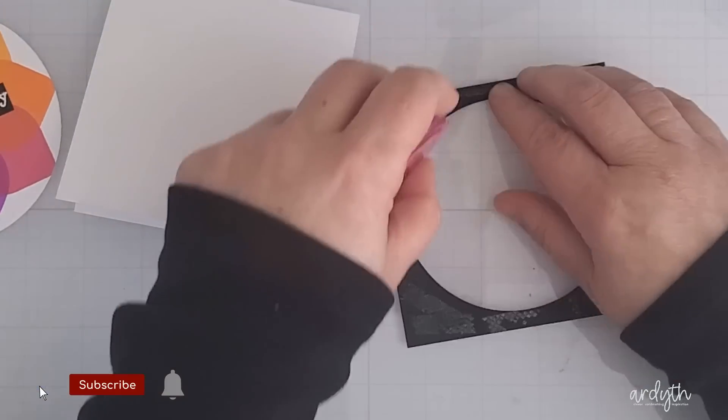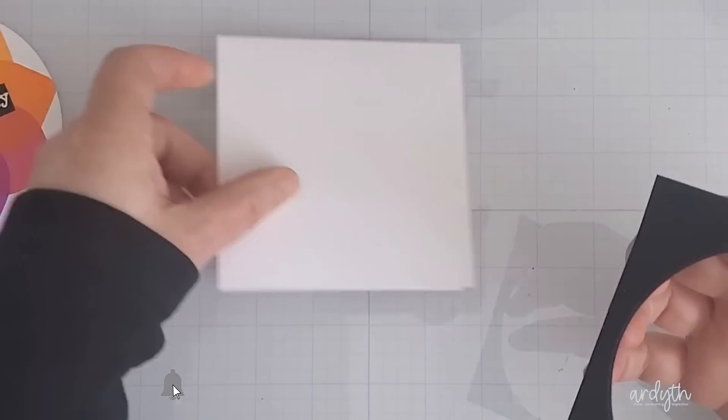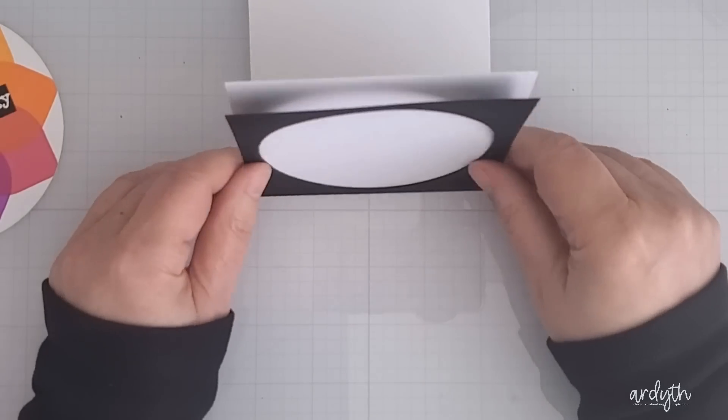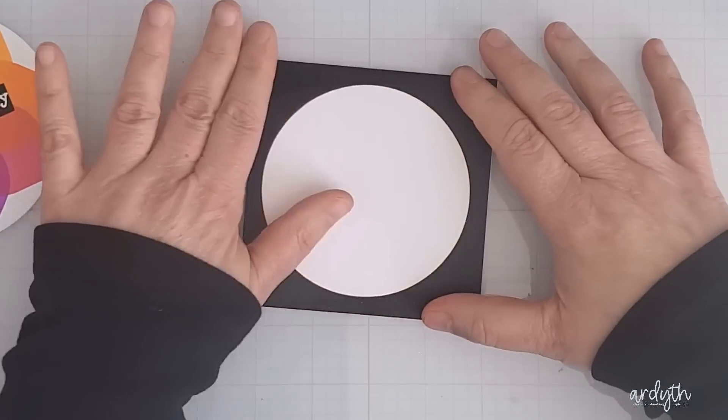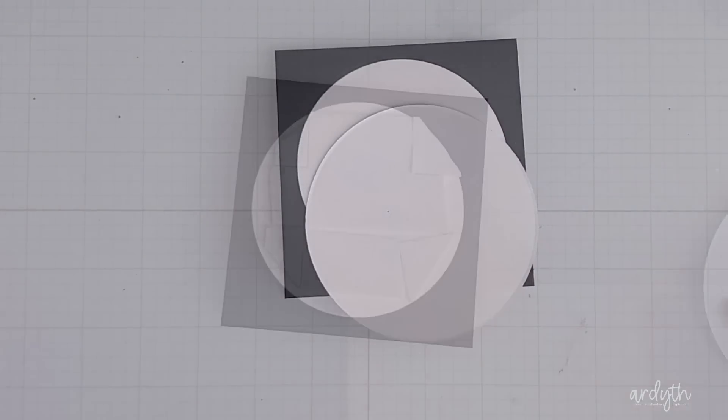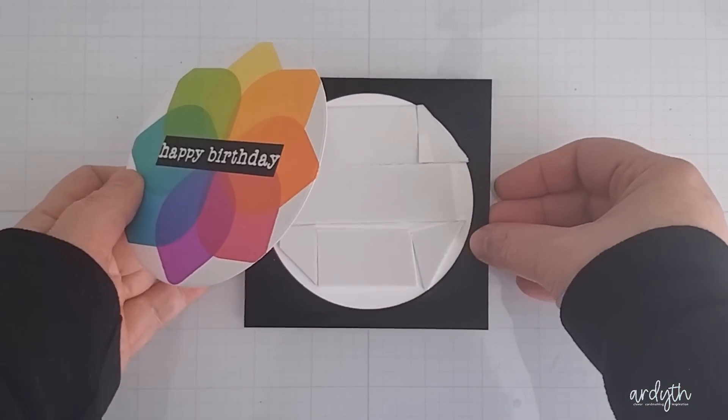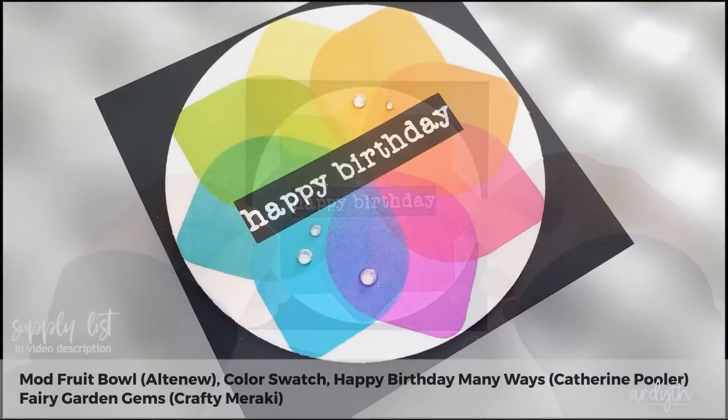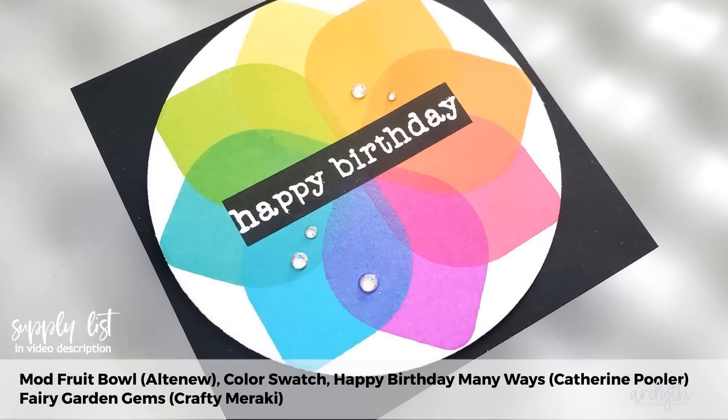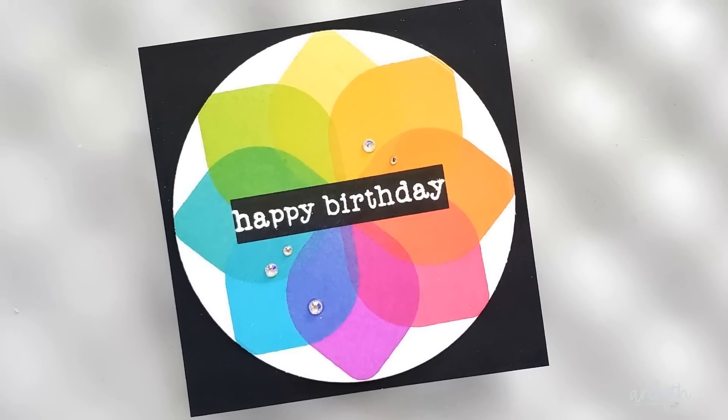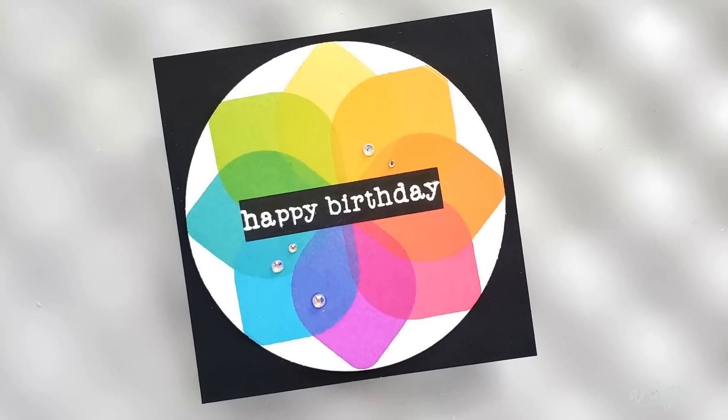But I can take this a step further. Since that rainbow circle panel will be covering most of the black panel I can cut the center out of it and use the black circle I get for a future card. Then I can add this black frame onto the card, pop up the circle panel with some foam tape for a bit of dimension and no one will ever know that that circle is missing. This kind of simple rainbow card is one of my favorites and I want you to notice how where the colors overlapped I created new colors.